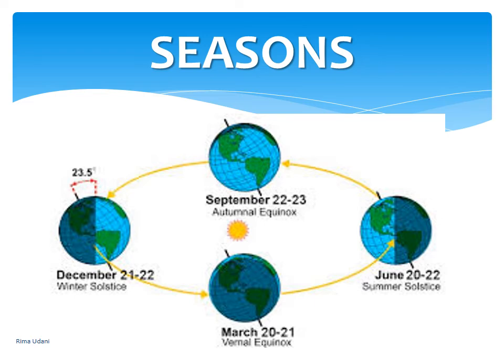On 23rd September it is autumn season in the northern hemisphere and spring season in the southern hemisphere. Autumn is when the trees shed their leaves, which become very dry. Spring season is when you see flowers in full bloom. The opposite is the case on 21st March, when it is spring in the northern hemisphere and autumn in the southern hemisphere.